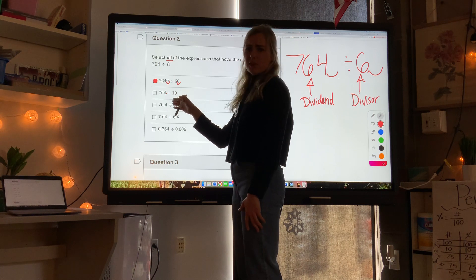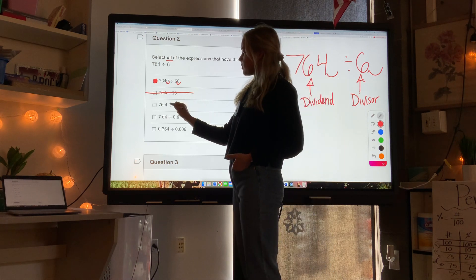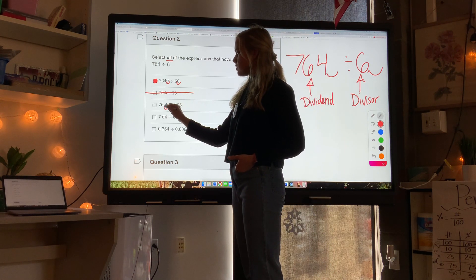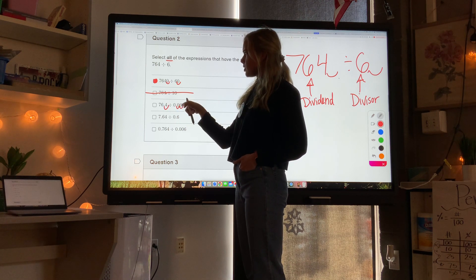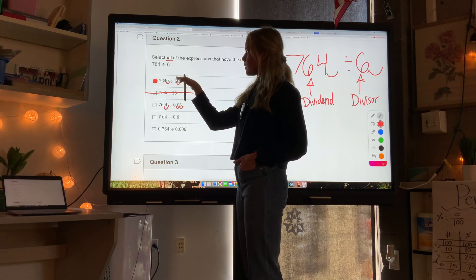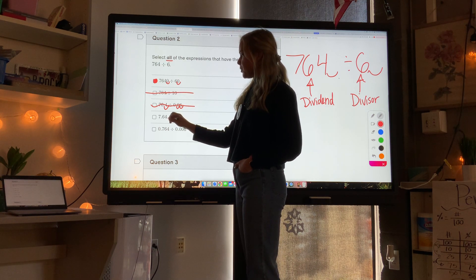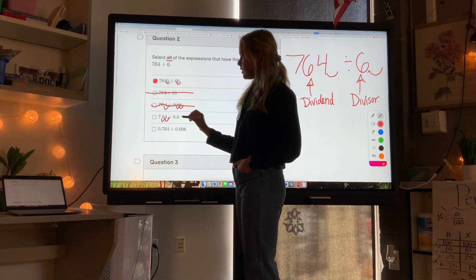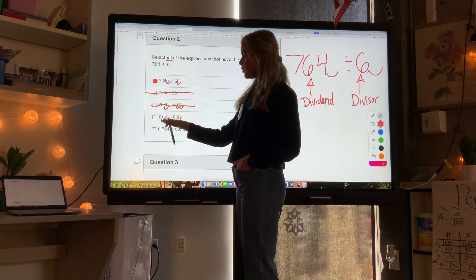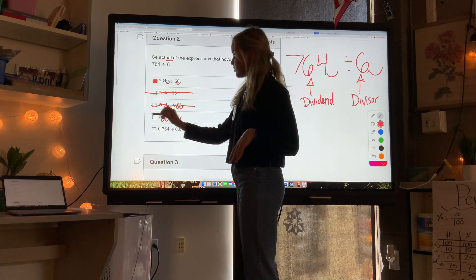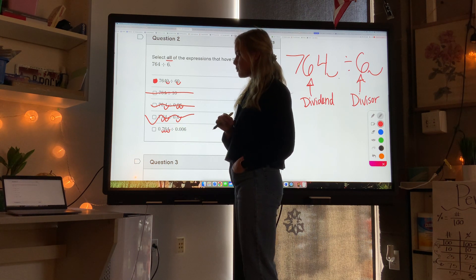Here's 764, the decimal was not moved. Ten is a different number, so if I'm dividing by a different number it will not have the same value. This one - if I started at 764 I moved the decimal to the left one time. If I started at 6 I moved the decimal to the left two times, so these are moved a different number of times so they will not have the same value. This one - if I started with 764 I moved the decimal to the left two times. If I started at 6 I moved the decimal to the left one time, so this was moved two times, this was moved one time, so they're not the same answer or quotient.